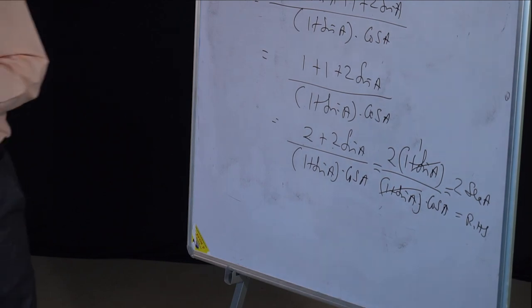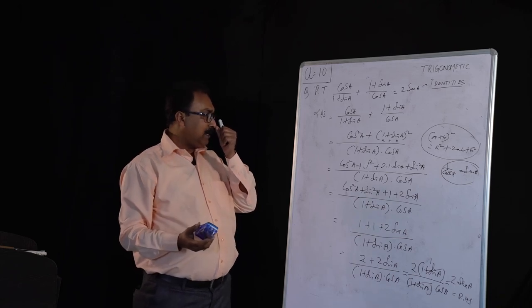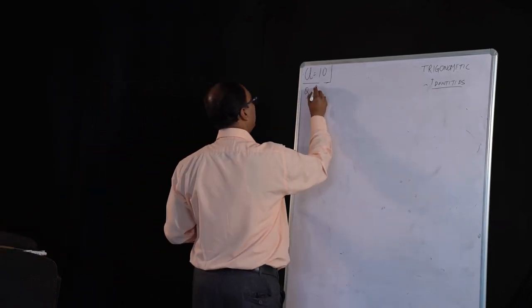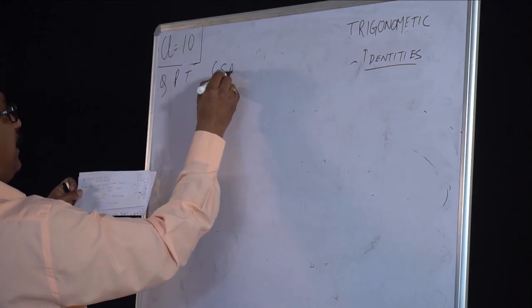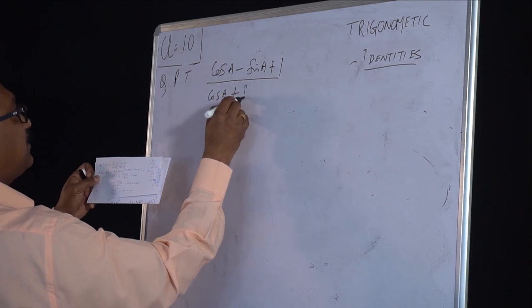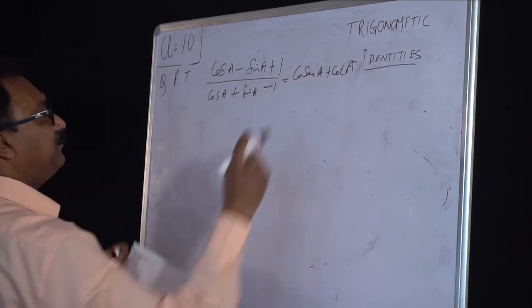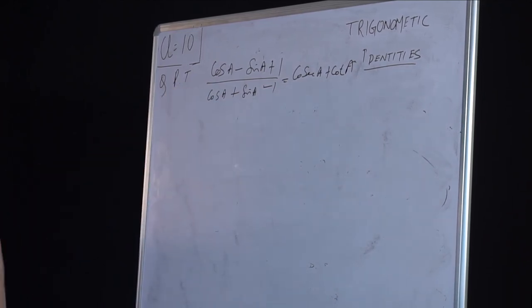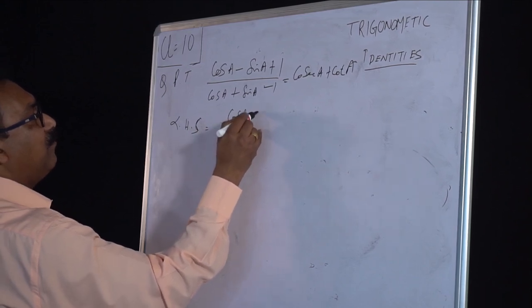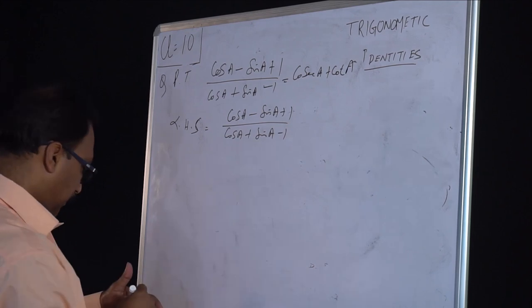We chose some questions randomly which are related to the exercises, and you can solve the others similarly. Now write the next question. Prove that: (cos A minus sin A plus 1) divided by (cos A plus sin A minus 1) equals cosec A plus cot A.